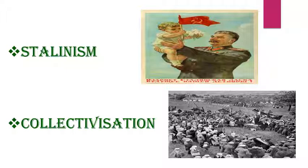By 1927–28, towns in Russia were facing an acute problem of grain supplies. The government fixed prices of grains, but peasants refused to sell their grain to government buyers at these low prices. Stalin believed that rich peasants and traders in the countryside were holding stocks in the hope of higher prices. This situation led Stalin to introduce the collectivization of Soviet agriculture.